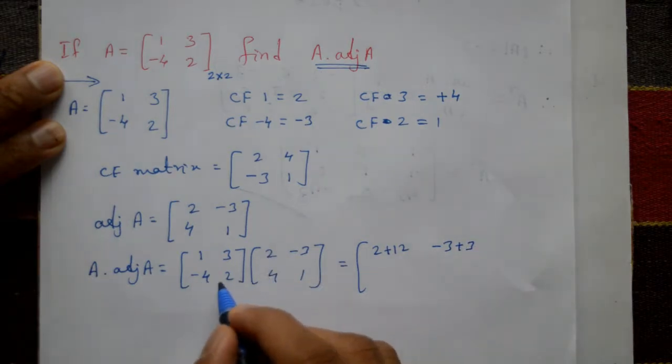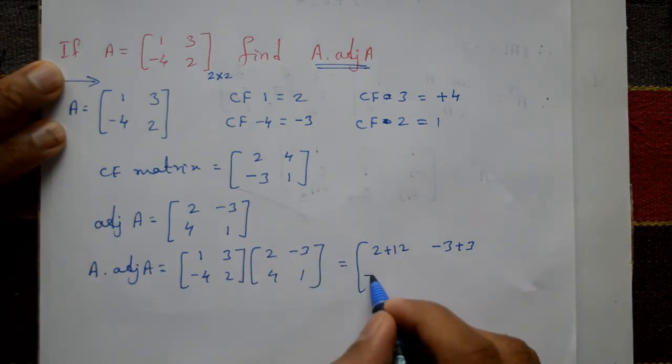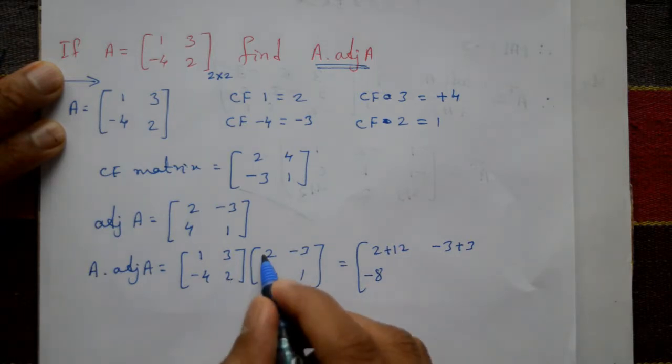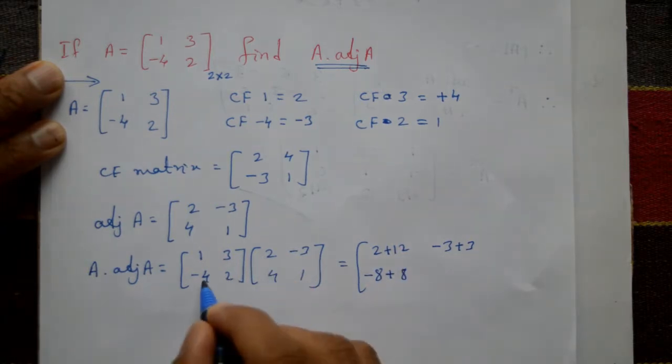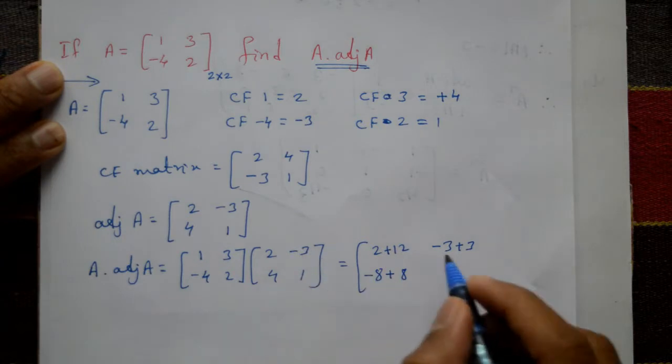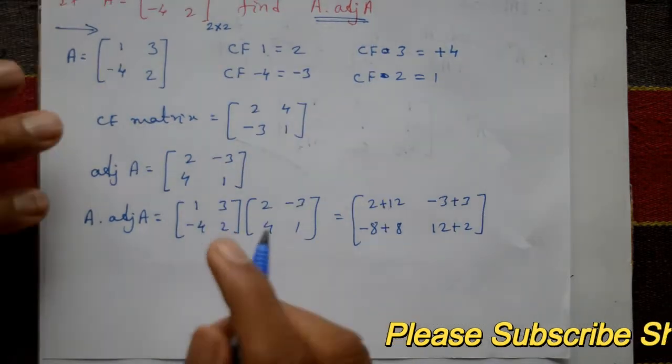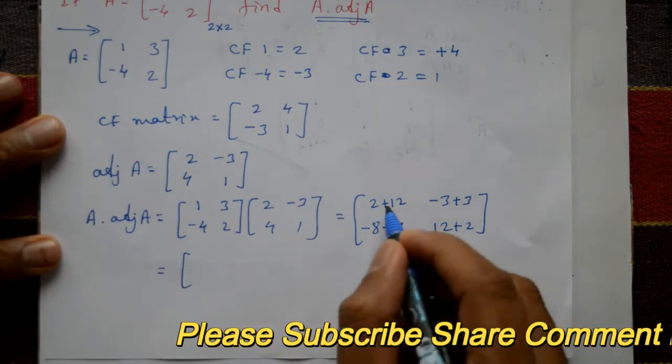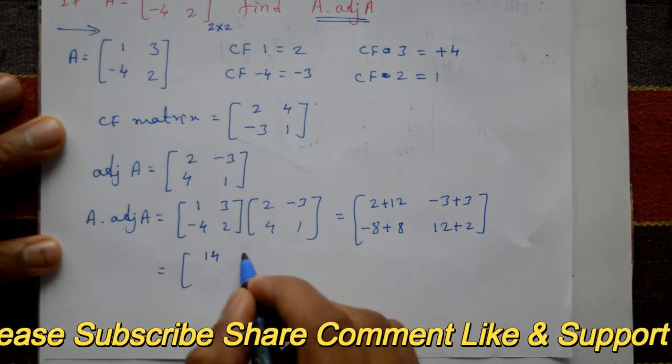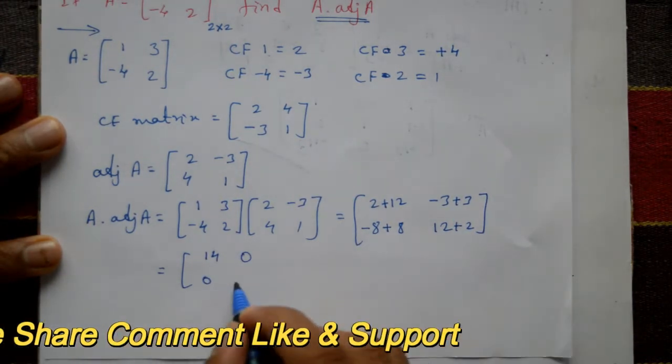Next is second row, first column: -4×2=-8 plus 2×4=8, which equals 0. Second row, second column: -4×(-3)=12 plus 2×1=2, which equals 14. And this is equal to A times adjoint of A equals [14, 0; 0, 14].